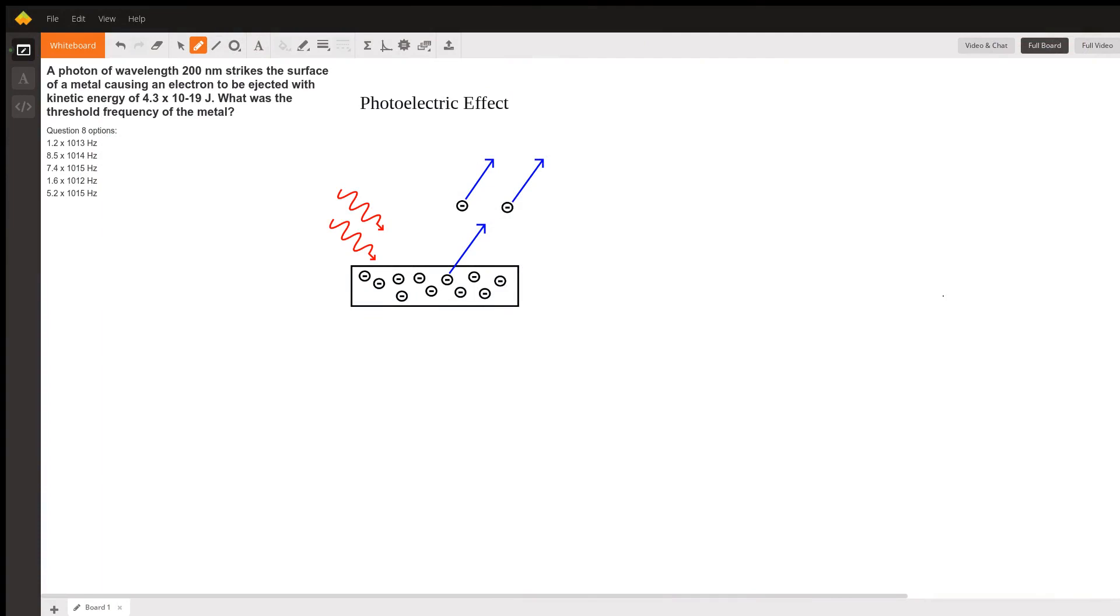This is your pretty typical photoelectric effect question. What you really want to take away is that when a photon of light, basically when a beam of light strikes the surface of a metal, if that photon has enough energy, then it's able to eject or cause the emission of an electron off the surface of a metal.